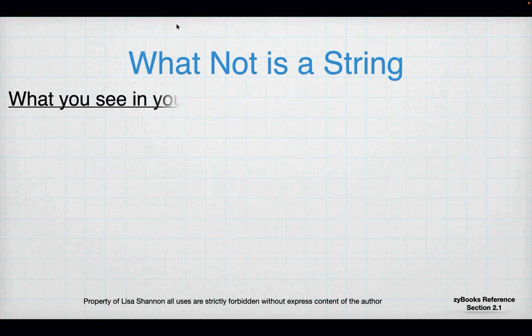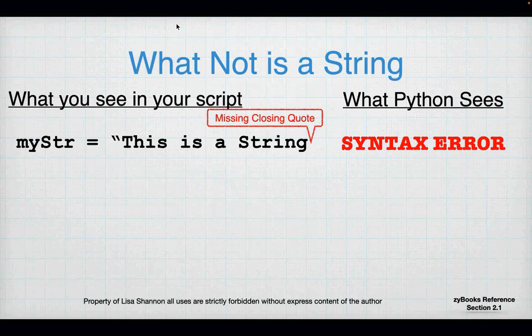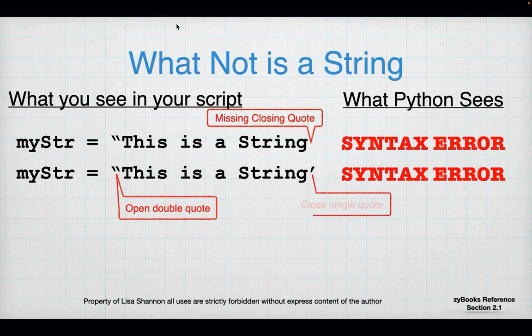So what is not a string? Let's take a look at some examples. When I see in my script 'this is a string', but there's a missing quote after the G — Python does not consider this a string. This will get you a syntax error, and it won't give you the error when you expect it. I have an opening double quote and a closing single quote — again, this is a syntax error.